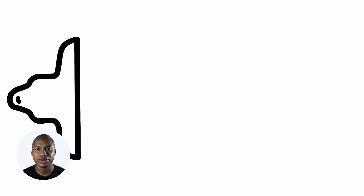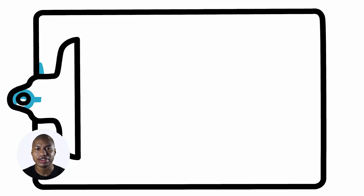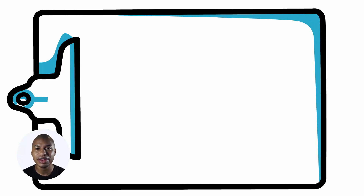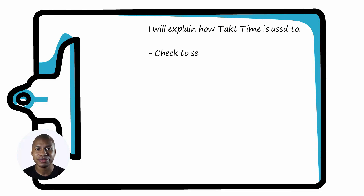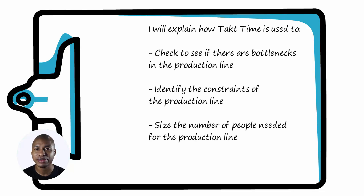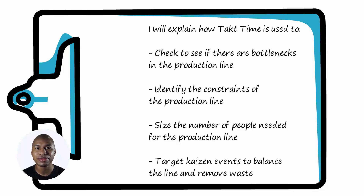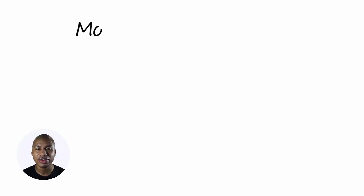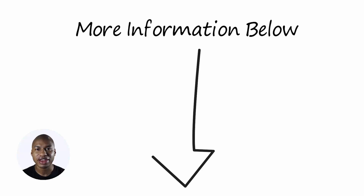In this video, I explained how to calculate the TACT time in different production conditions and on which points to pay attention. In the next videos, I will explain how TACT time is used to check if there are bottlenecks in the production line, identify the constraints of the production line, size the number of people needed, and how to target Kaizen events to balance the line and remove waste. Thanks for watching and don't forget to subscribe to the channel. In the description, you will find some useful resources.